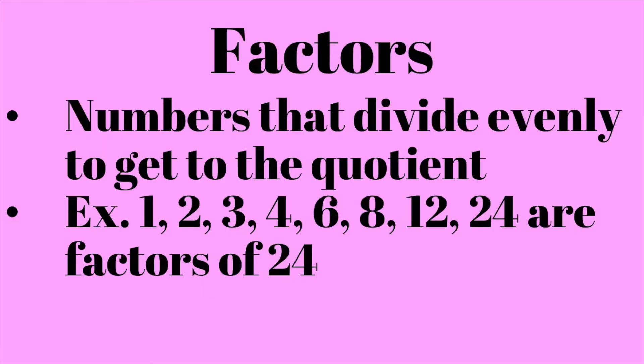A really good example of a number with a lot of factors is 24. So 24 is divisible by 1, 2, 3, 4, 6, 8, 12, and 24. So it's got quite a few.